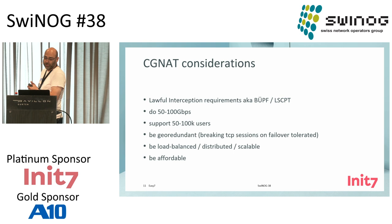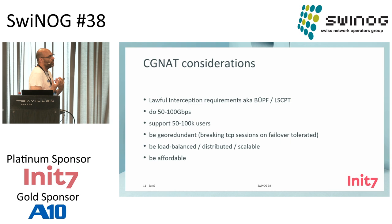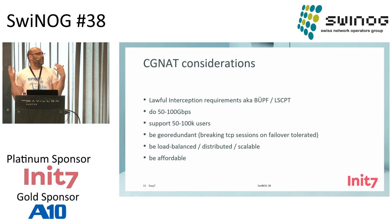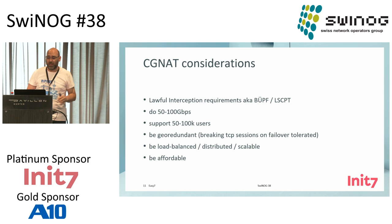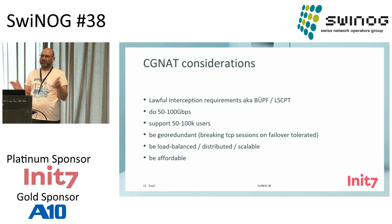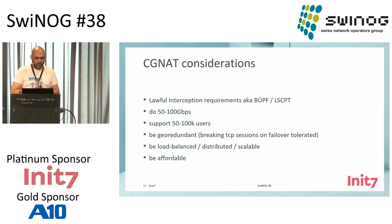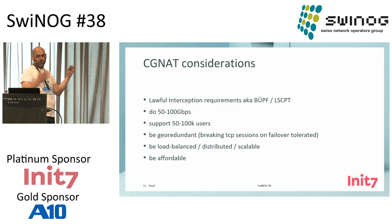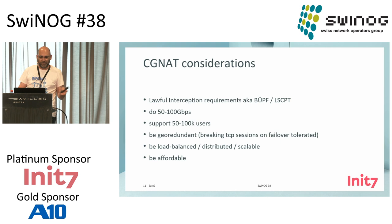What were our considerations when starting this? First, lawful interception requirements — and I said this like 20 years ago, this is going to restrict us all the time, and it does. We want a platform that does roughly 50 to 100 gigabit, and we want to be able to support 50 to 100k users. We want a system that is geo-redundant, that can do load balancing, that is distributed and scalable. And also, it should be affordable. Init7 is not a huge company, so we like to do simple things that work.